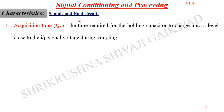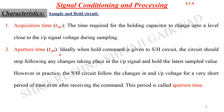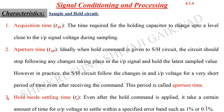Now let's see the characteristics of the sample and hold circuitry. The first one is acquisition time (TAC): the time required for the holding capacitor to charge up to a level close to the input signal voltage during sampling. The next one is aperture time (TAP): ideally, when the hold command is given, the circuit should immediately stop following changes in the input signal and hold the latest sampled value. However, in practice, the circuitry follows changes in input voltage for a very short period even after receiving the hold command — this period is called the aperture time.